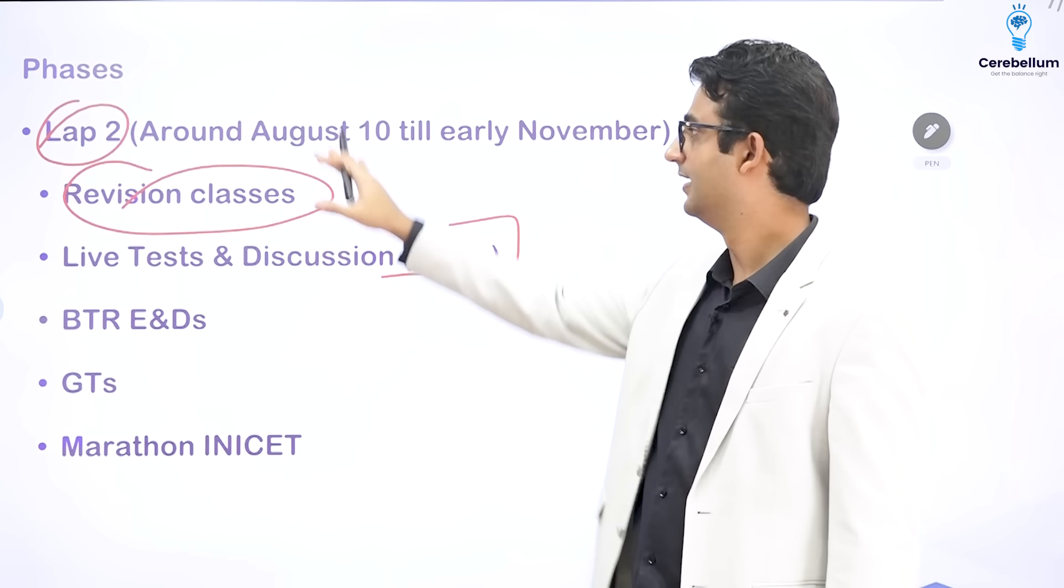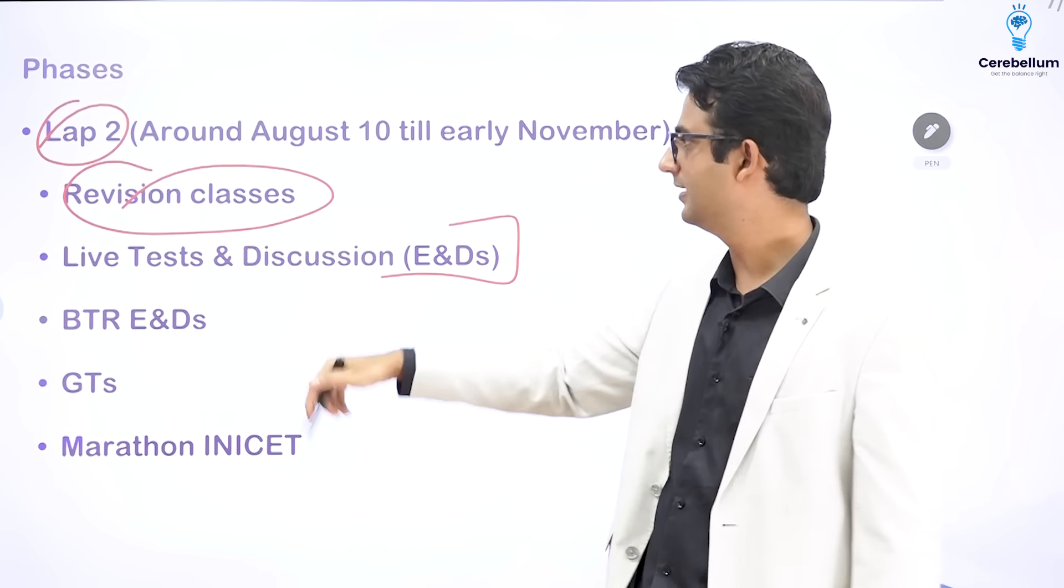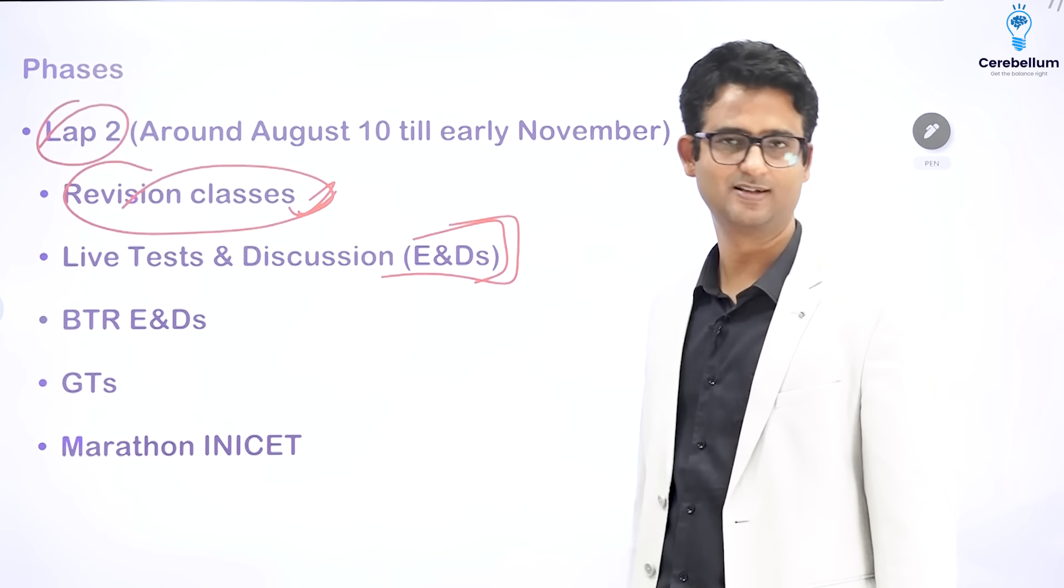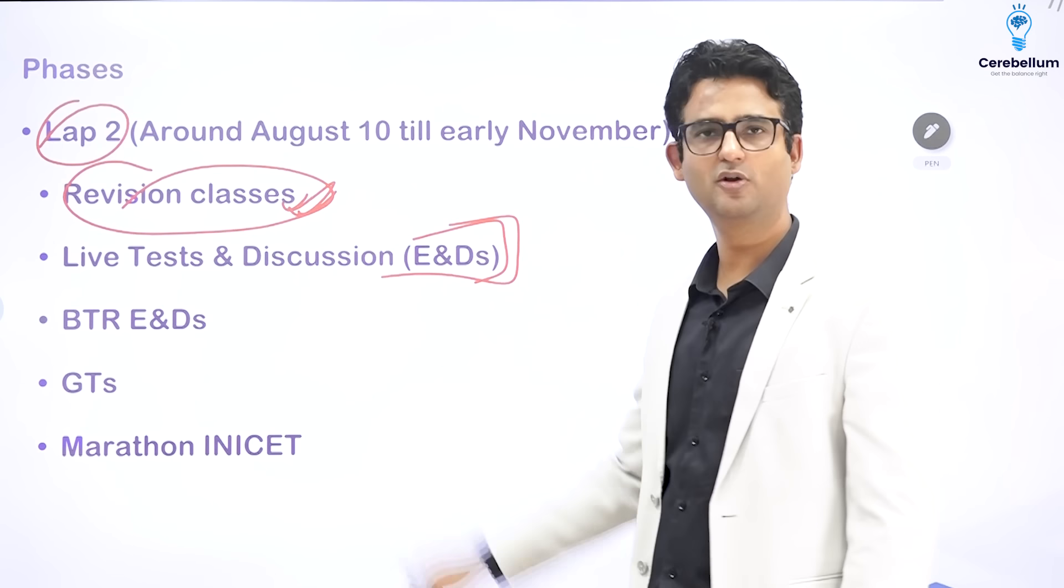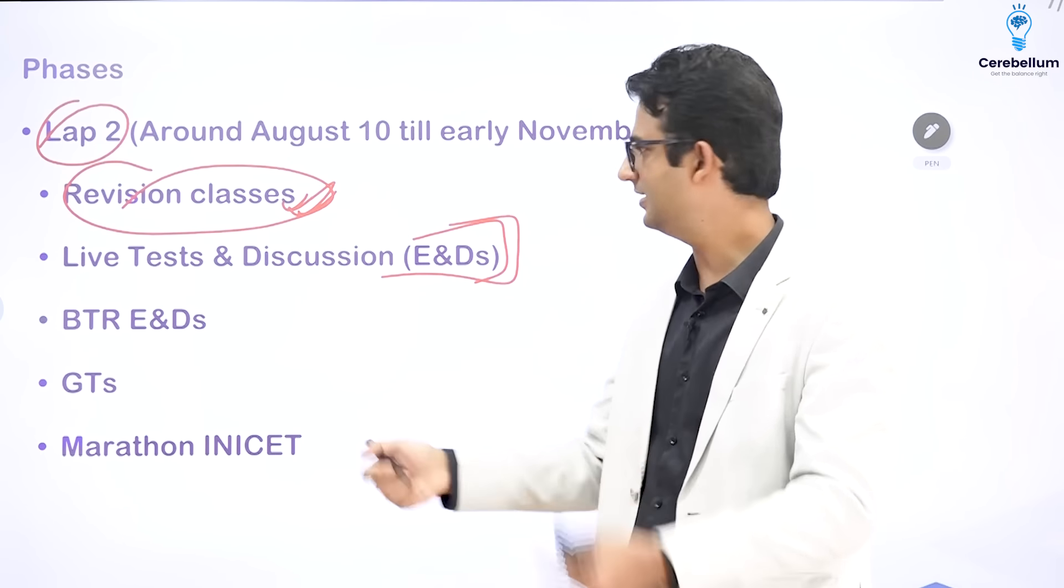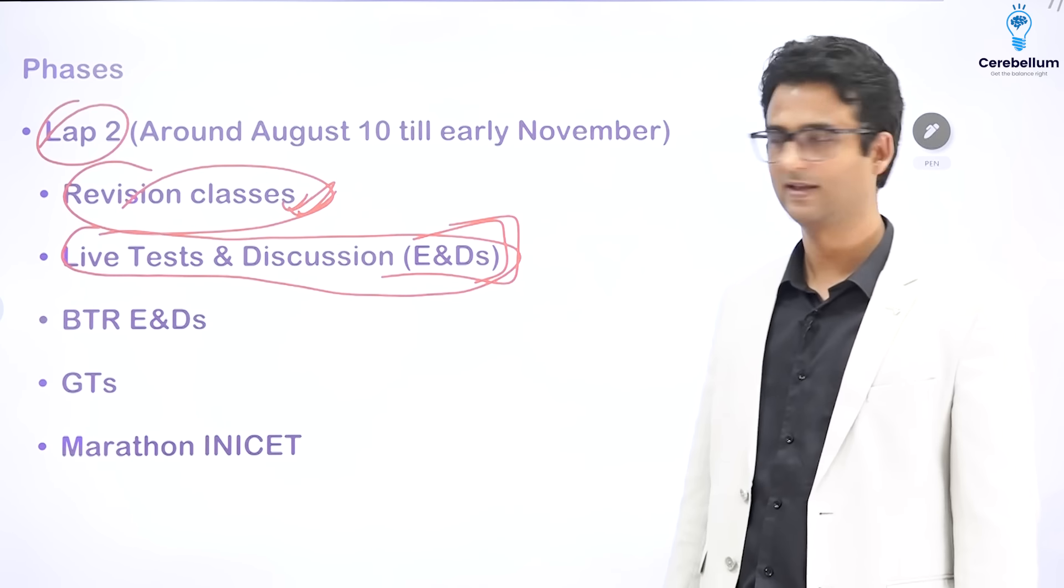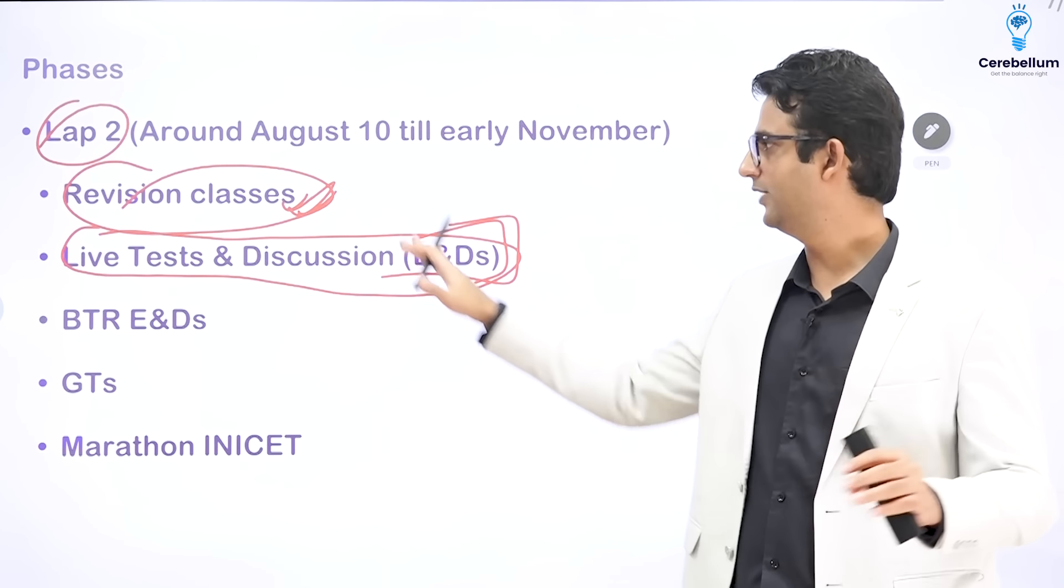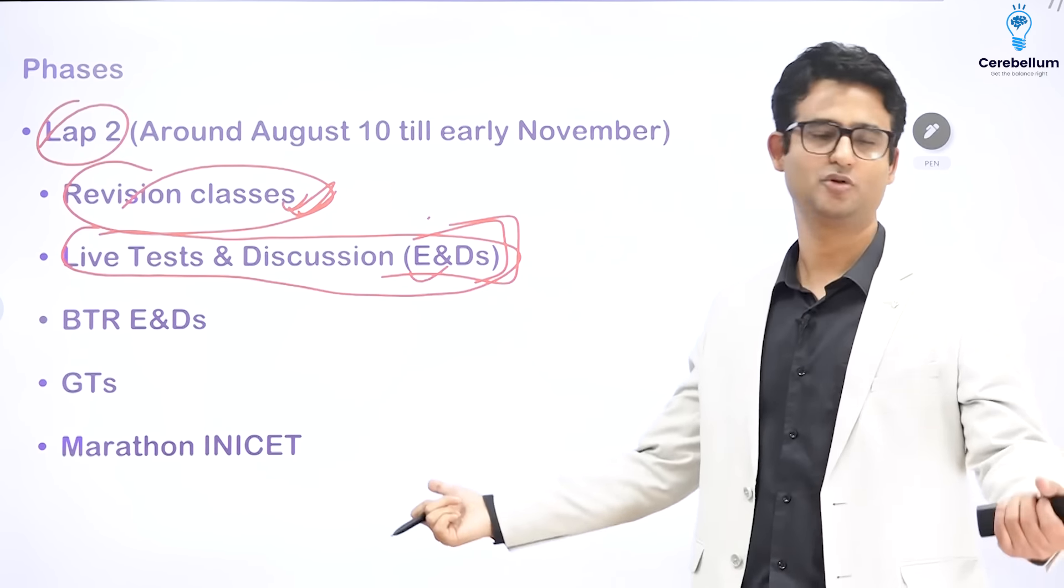Now, we start with the tests and discussion. These people, they get enough time in the daytime to do the Q-bank. So for them revision classes followed by tests and discussion. Now, you have two options. If you have completed the course, you can just follow, you can just attend the revision classes. Rather than revising yourself, you can have passive revision. And now, you start appearing for these ENDs, the tests and discussions. Or you may say that I have done the classes earlier. I do not want to revise them. I will revise them on my own. I will just go for END. You can do that.